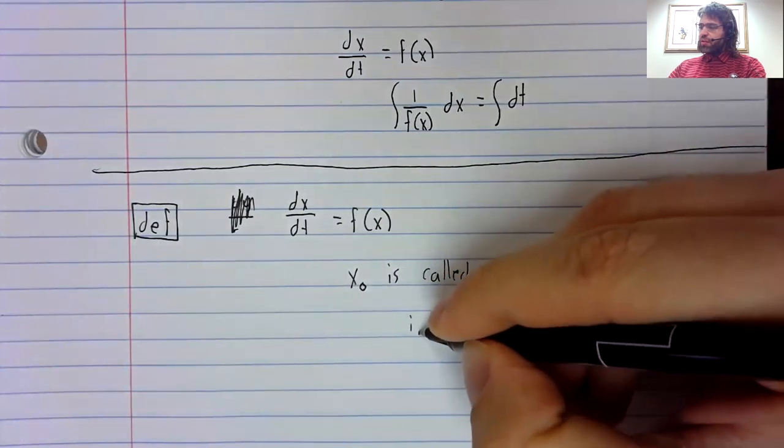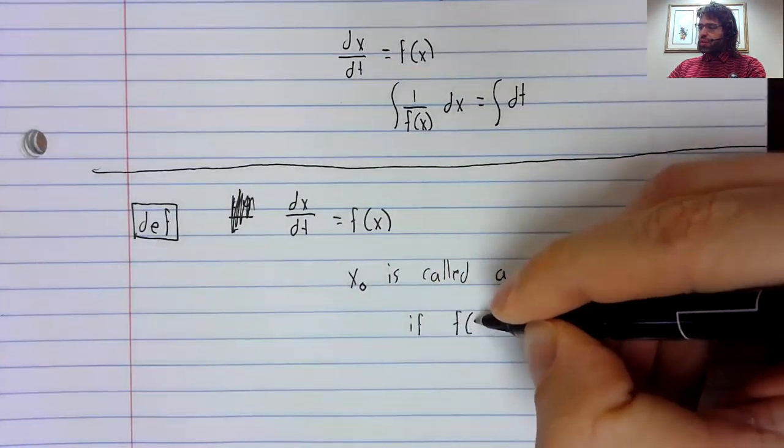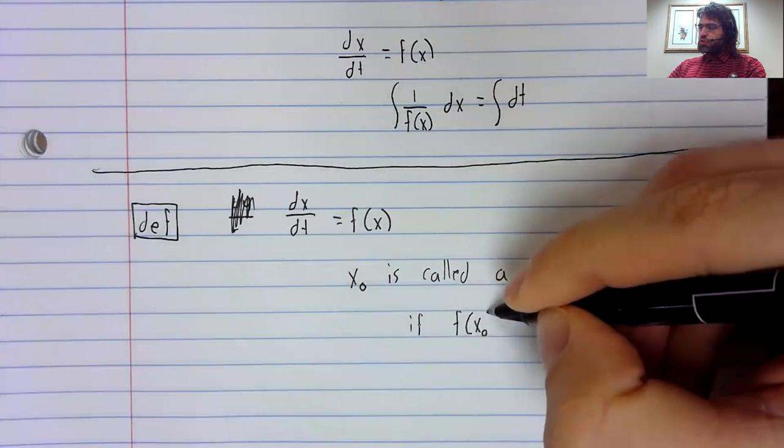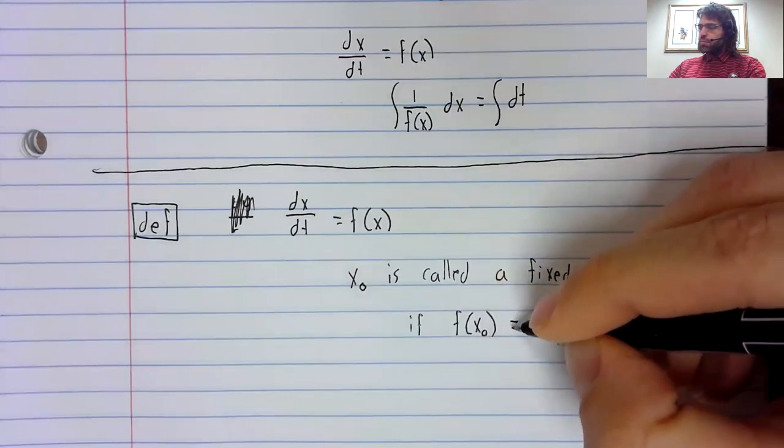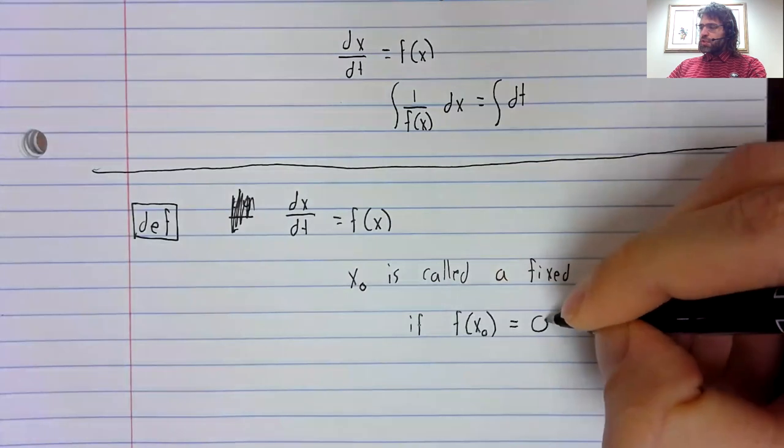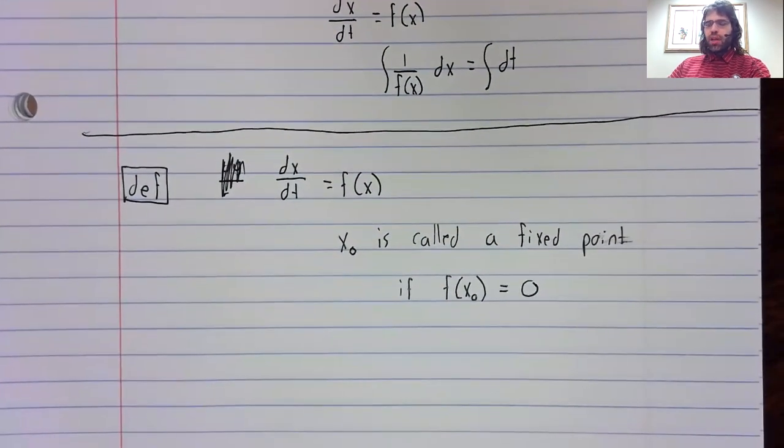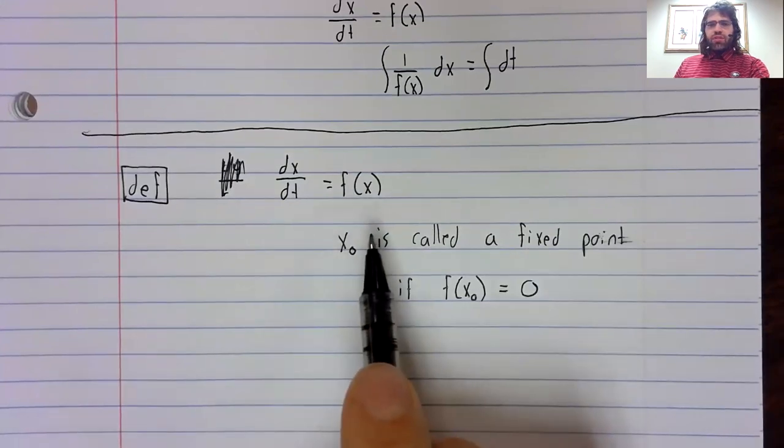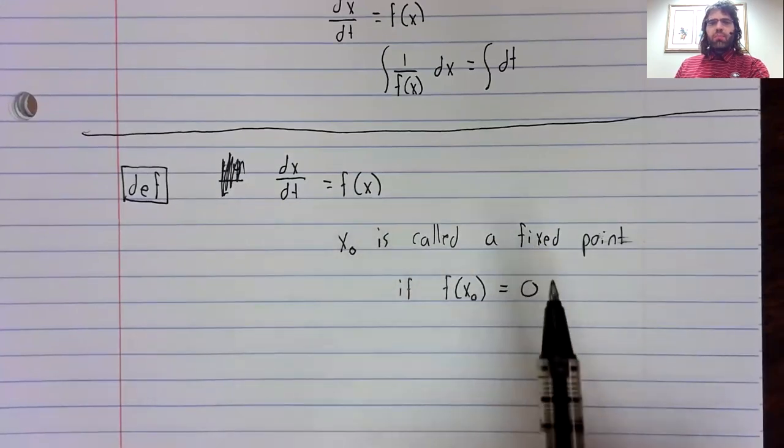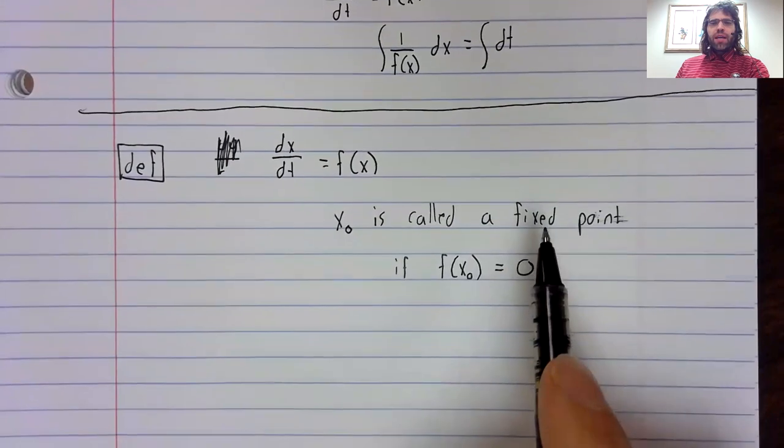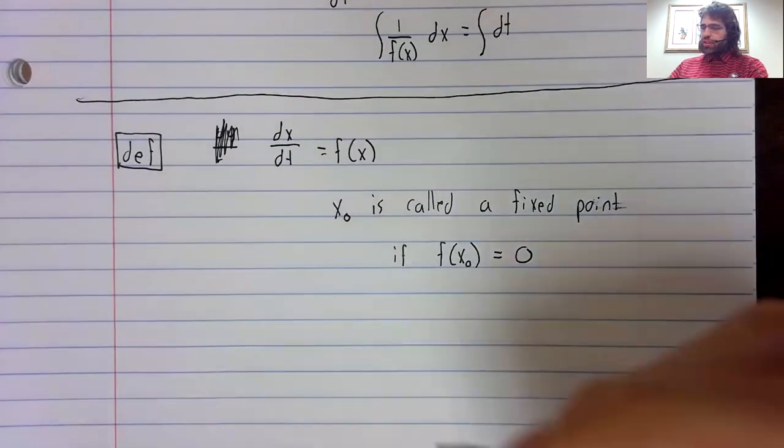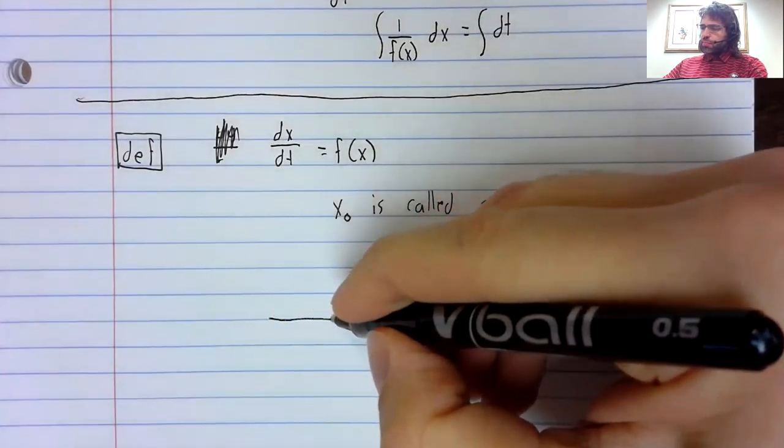If f(x₀) = 0. And where does this terminology come from? Why a fixed point?